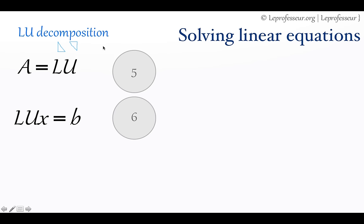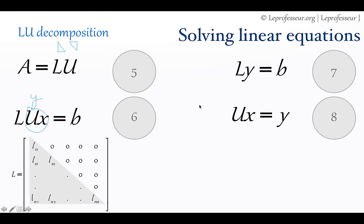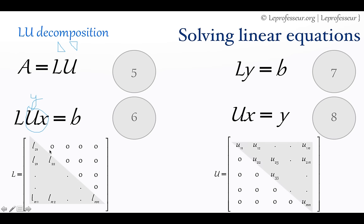Once you have A converted into lower triangular and upper triangular matrices, you can represent the whole system as LUx = B. You can then calculate by forward substitution: if we call Ux = y, we solve Ly = B first, and then solve Ux = y. In the lower triangular matrix, all entries above the diagonal are 0, and in the upper triangular matrix, all entries below the diagonal are 0. So once we have such matrices, we can easily compute the x variables.